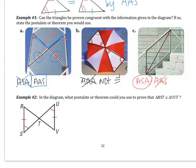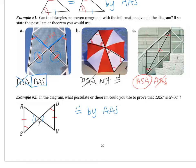Example two is one I'd like you to try on your own. I want to know what postulate or theorem you would use to prove the triangles congruent. Pause the video and come back when you're finished. You should have started by marking the vertical angles, which gives two pairs of angles and a pair of sides. The sides are not the included sides, so these triangles are congruent by AAS.